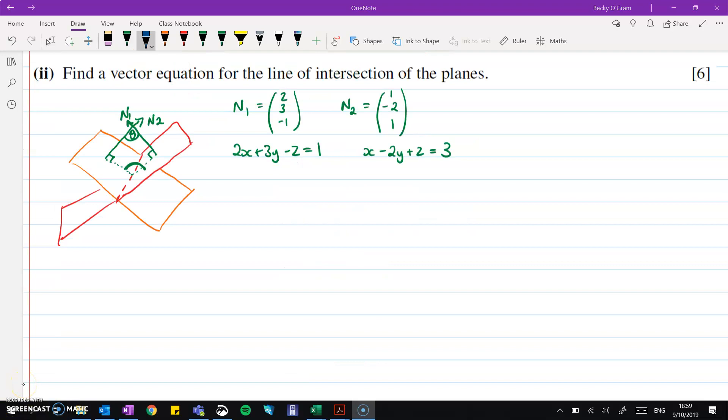This question asks us to find the vector equation for the line of intersection of the planes. So it's the vector equation for this line here, where those two planes cross. Now what we need is to find a point that sits on that line, and then a vector that goes in the direction of that line. Now we can get the direction vector fairly easily. If we do the vector product of the two normals, that will go off in the same direction as the one that we're looking for. It will be normal to both of those vectors, which is what this line will be. So we can use vector product to find it.